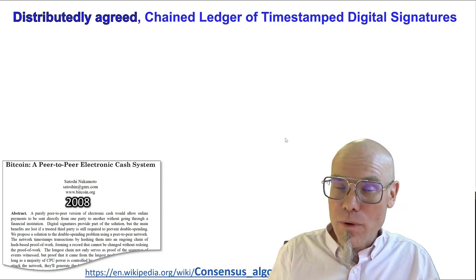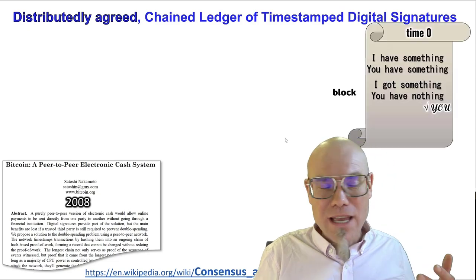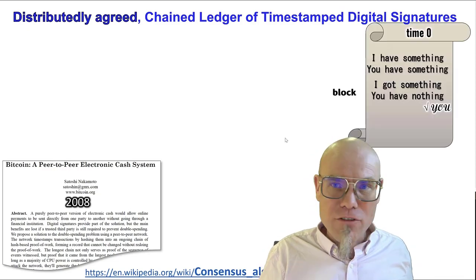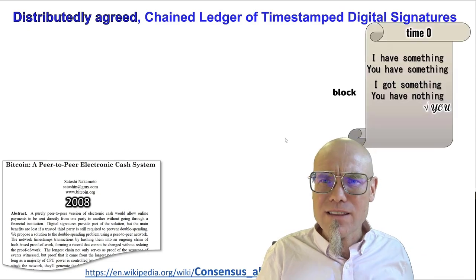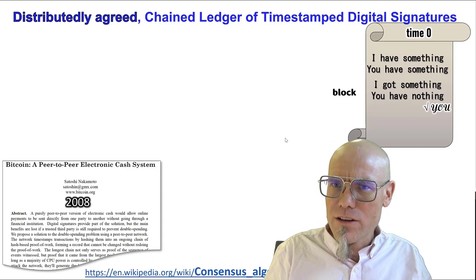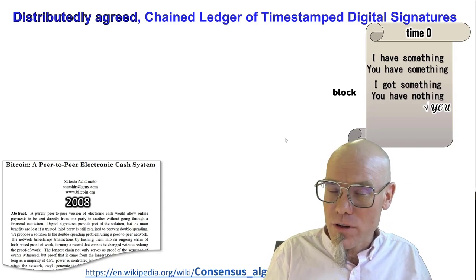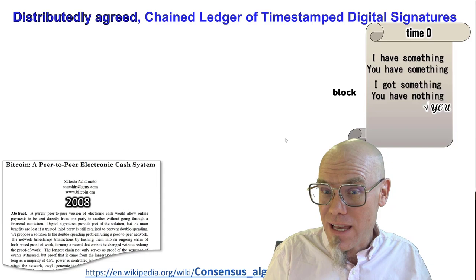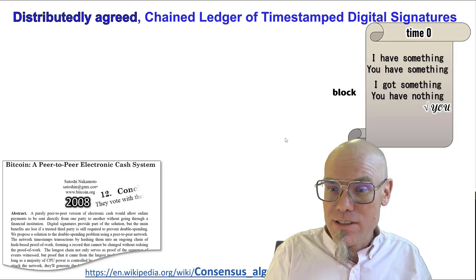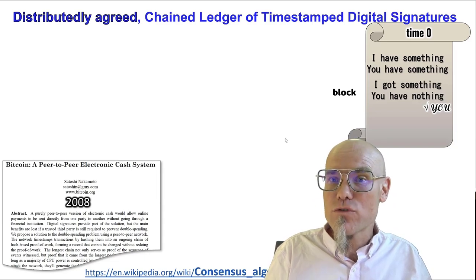Why do we need consensus in the blockchain? We have a block, an information record, and the question is: what do we write on the block next? How do we decide? We might disagree on that. So with a consensus algorithm, we agree on what to write.